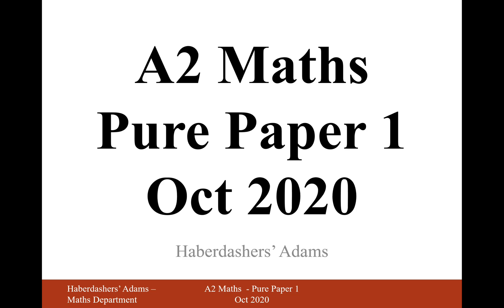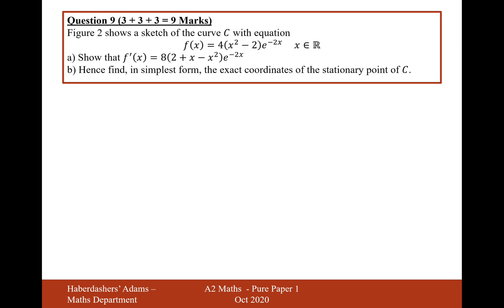Hello there and welcome to the first paper from the October 2020 series. Here we're looking at question 9. Figure 2 shows a sketch of curve C with equation f(x) equals 4x squared minus 2e to the minus 2x. It shows that f'(x) equals this expression here. So we're looking to differentiate this now.